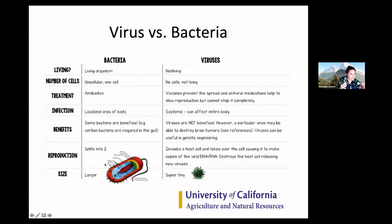With bacteria, the cells split into two to reproduce. It's not true sex, but there can be lateral gene transfer between bacteria, meaning they can put genes out into their environment and resorb them to develop a new genotype essentially.